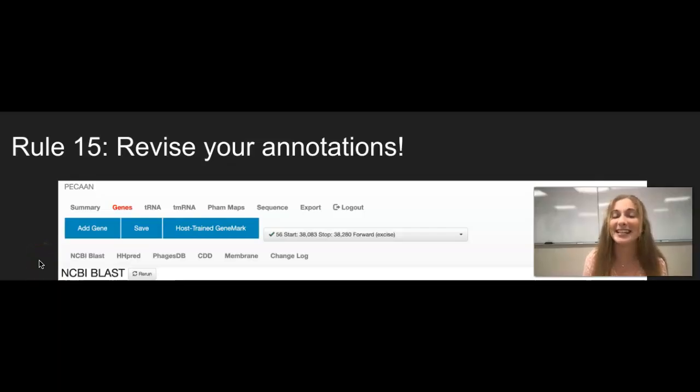And lastly, rule 15 stresses the importance and why we need to revise our annotations. As you annotate, make sure to go back and double check your work because it is very easy to make mistakes. Additionally, as you annotate, the functions of later genes can actually affect the functions of previous genes. So going back and double checking is a great way to fix any annotations that could be mistakes.